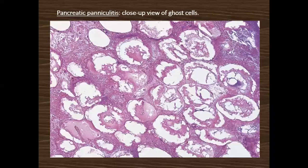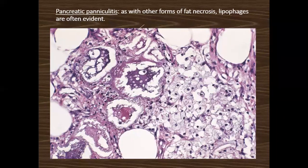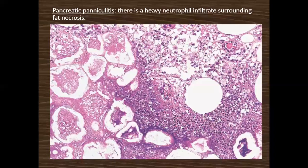On closer view of the fat necrosis, the ghost cells show loss of cellular details and even loss of cells. There is also dense neutrophilic infiltrate. In neutrophil-rich paniculitis, we include pancreatic, alpha-1 antitrypsin deficiency, infectious, and fictitious types — all of which show fat necrosis with a neutrophil-rich infiltrate.